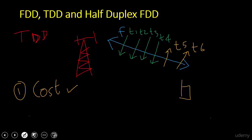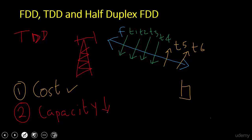The trade-off with TDD is that its capacity compared to FDD is a little bit lower. The way this lower capacity is justified is that TDD requires less spectrum — just an unpaired spectrum is needed for deployment.